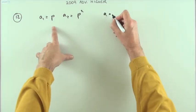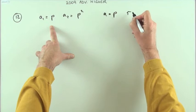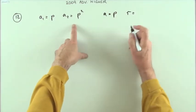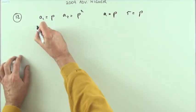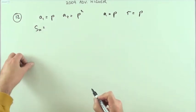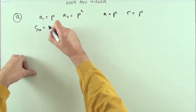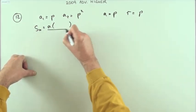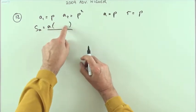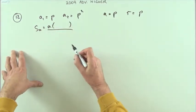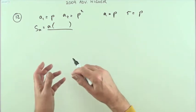For a geometric sequence, the first term is p and the common ratio is also p. The sum to n terms of a geometric series is given by a times (r^n - 1)/(r - 1). I'm going to use r^n - 1, so the denominator would also have to be that.